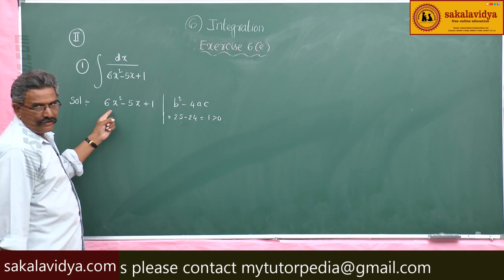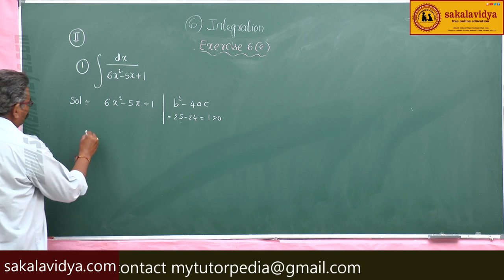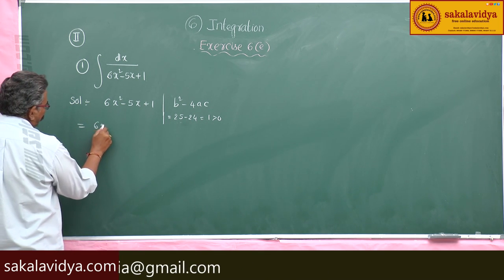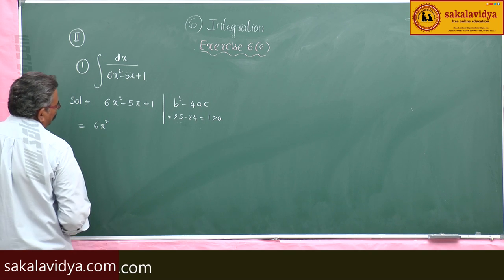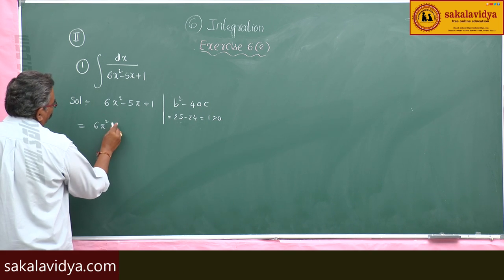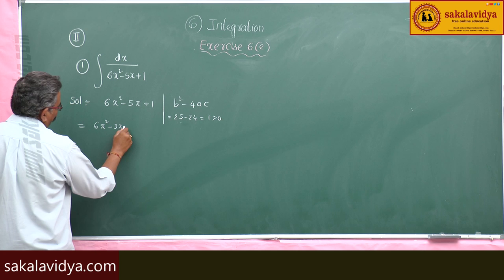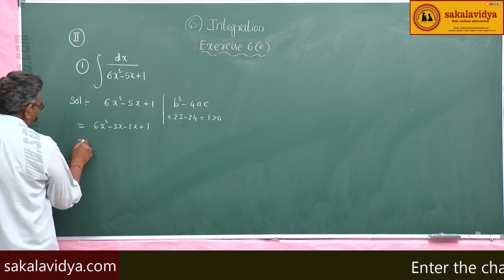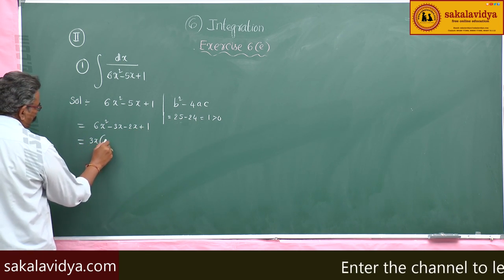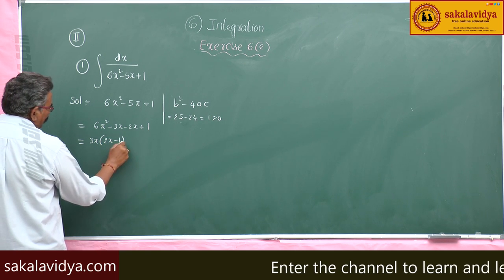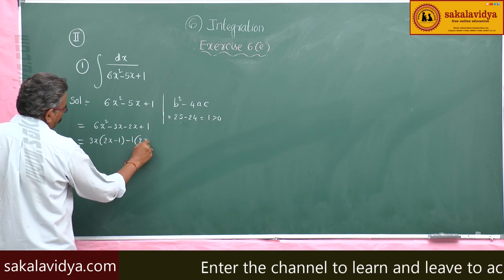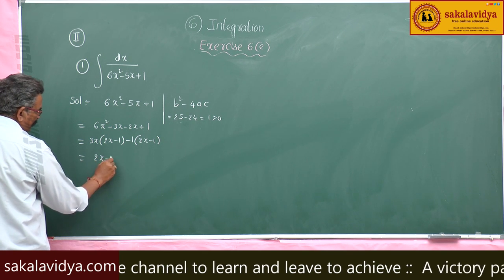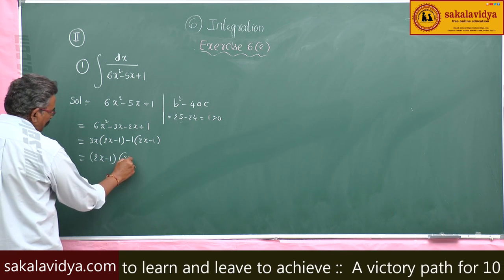It is reducible. So 6x² - 5x + 1 can be written as 6x² - 3x - 2x + 1. Take 3x common: 3x(2x - 1) - 1(2x - 1). So (2x - 1) is common, giving factors (2x - 1)(3x - 1).